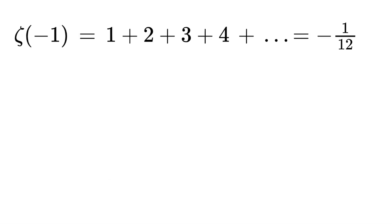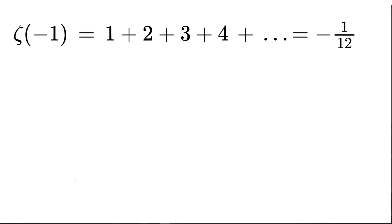If you plug in s = −1 to the Riemann zeta function, the output is −1/12. This means that 1 + 2 + 3 + 4 + … adds up to −1/12. Of course, this makes no sense and it shouldn't — there are other methods of summing infinite numbers and getting −1/12, and I suggest googling them since they aren't too complicated and are kind of interesting.